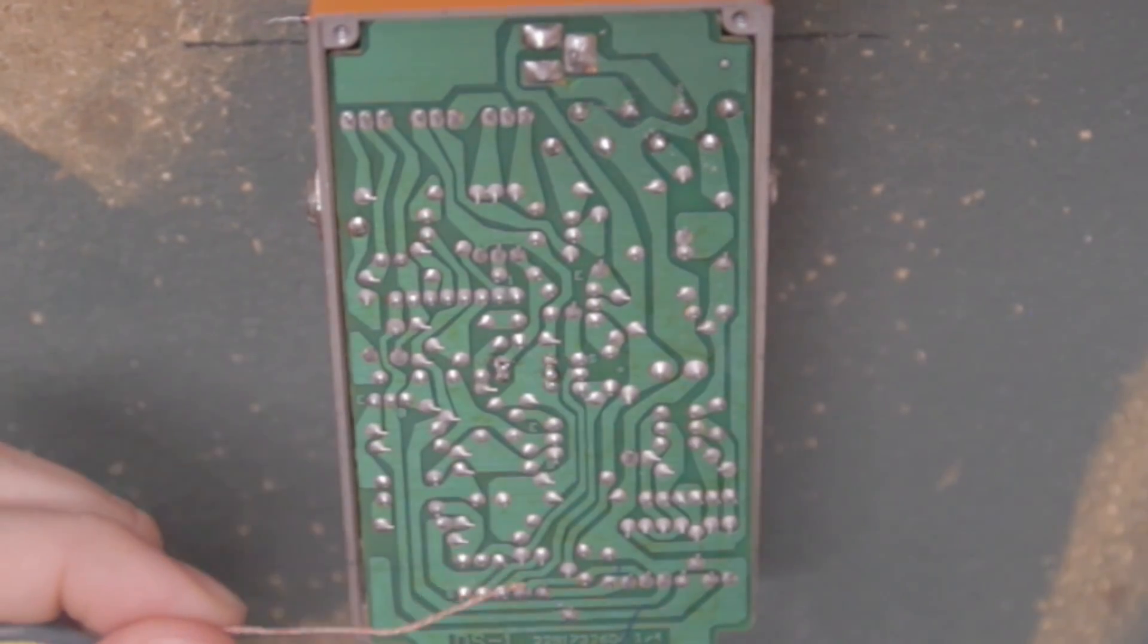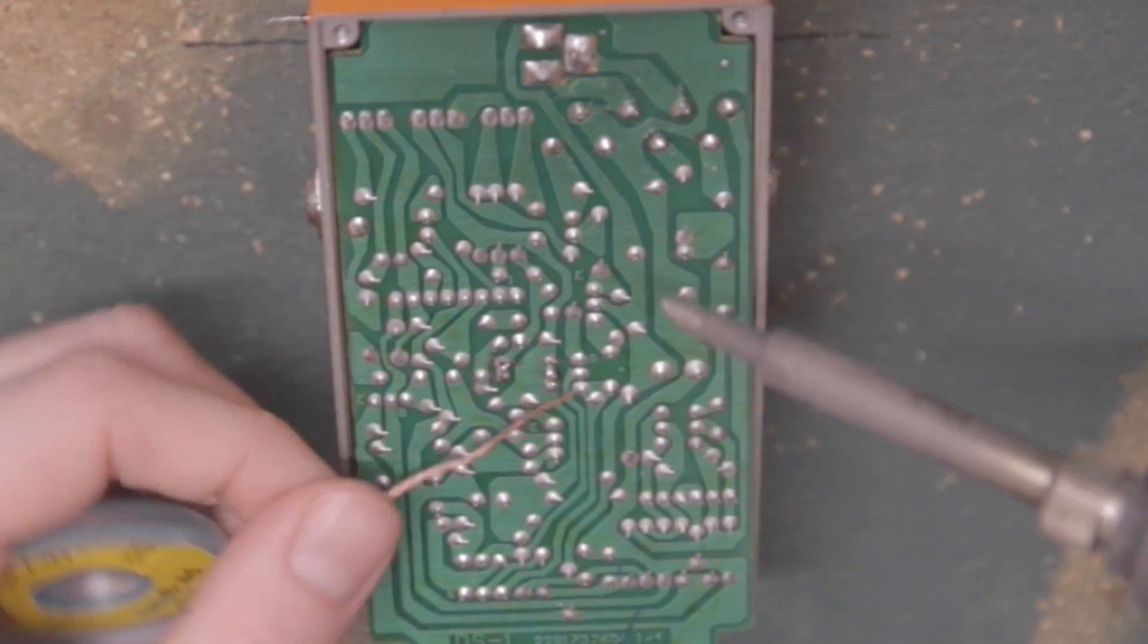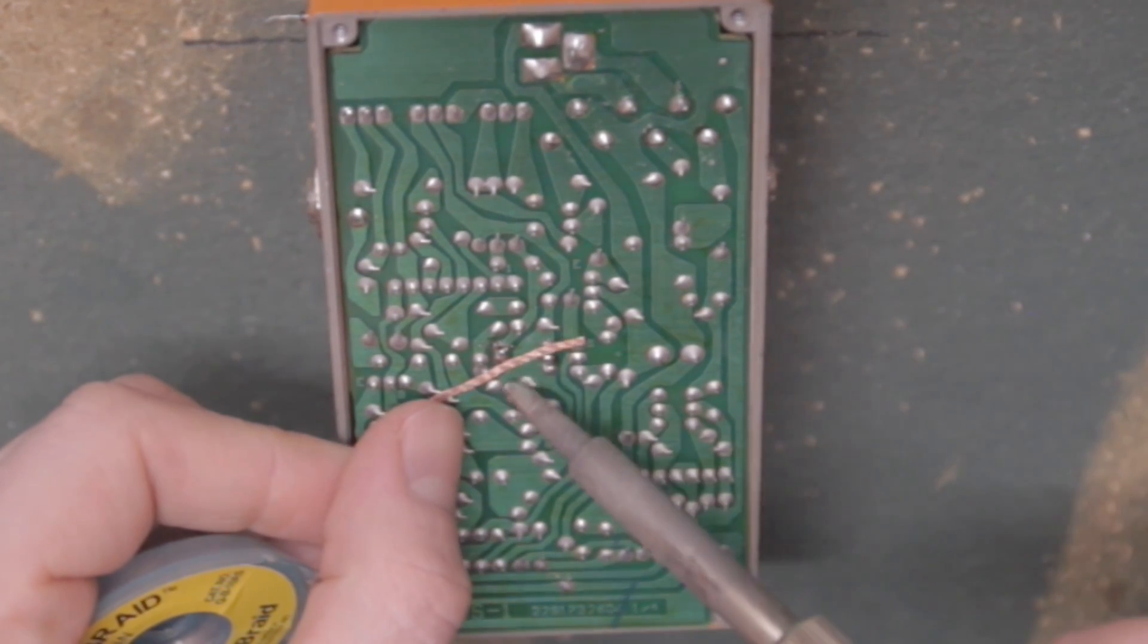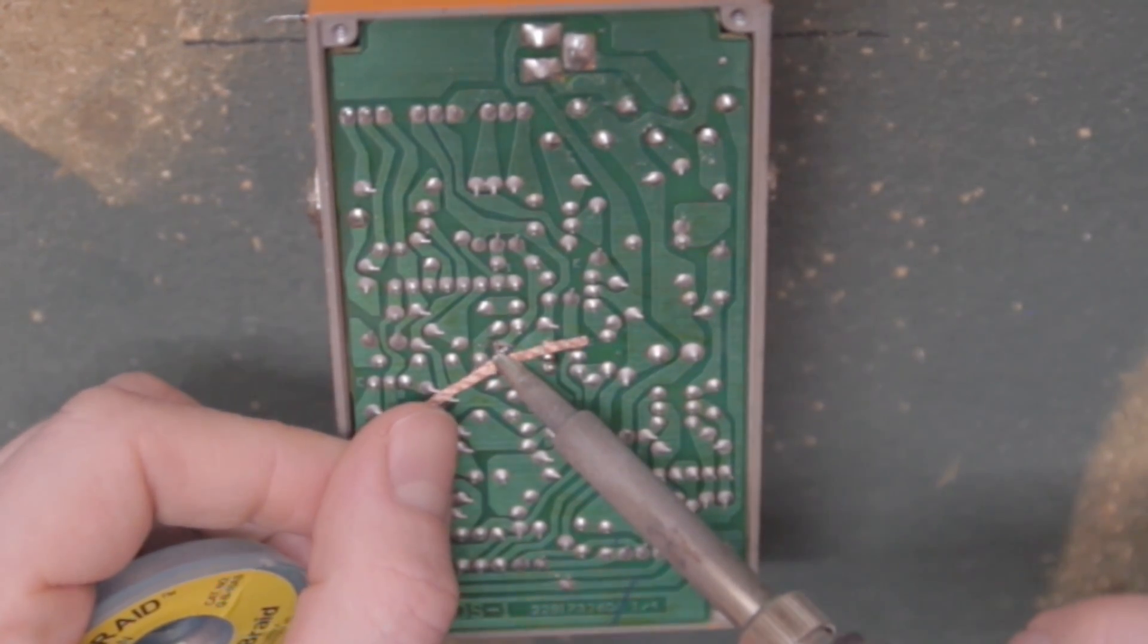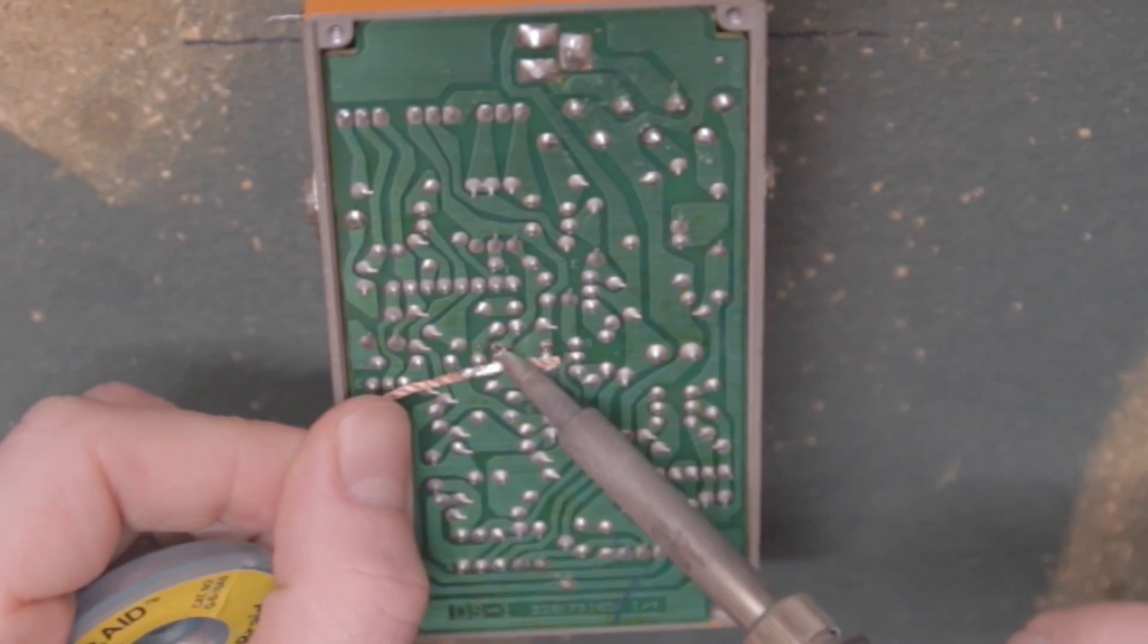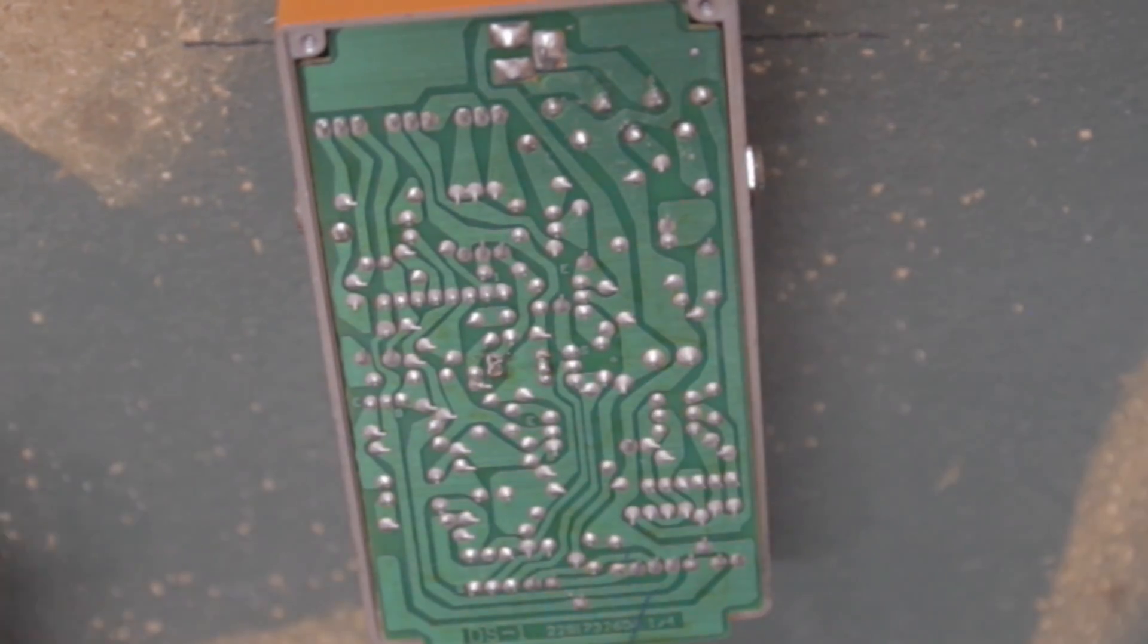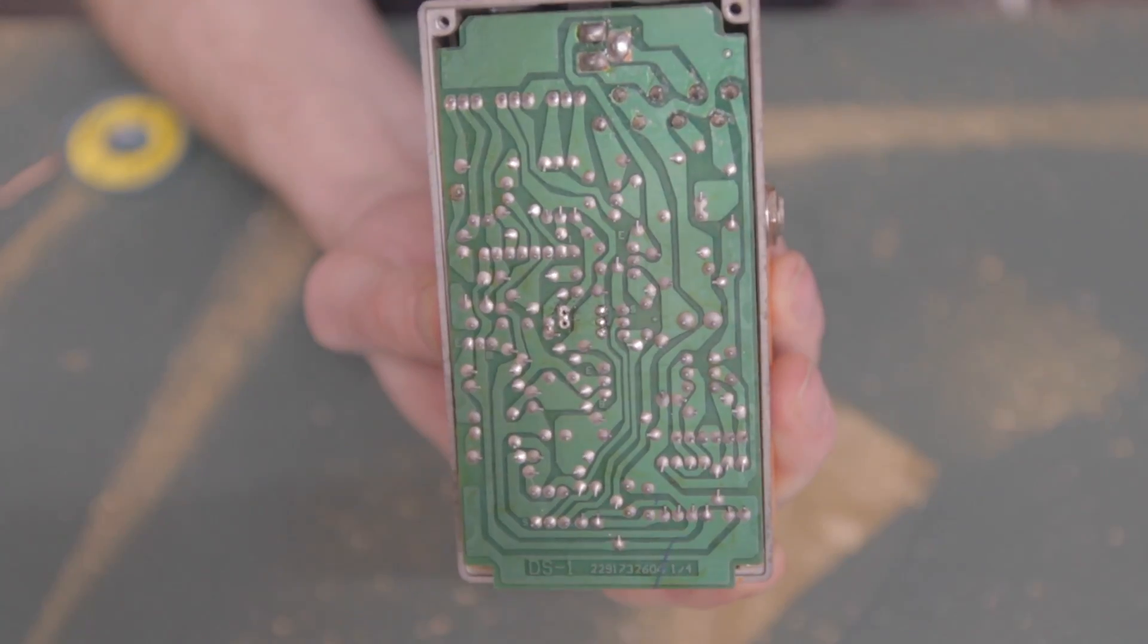The next method to clear the holes is with wick. Desoldering wick is coated with flux and will attract solder. Lay the wick over the pad and heat the wick above the pad. You'll see the wick start to pull the solder away. Sometimes it helps to drag the wick a bit while heating.